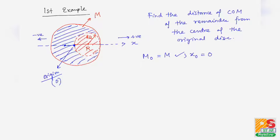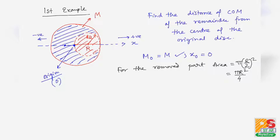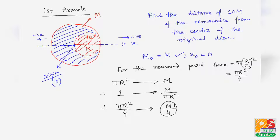What is the mass of the removed part? The area of the removed disc is π(R/2)² = πR²/4. The area of the entire disc is πR², which has mass M. By the unitary method, mass per unit area is M/(πR²), so the mass of area πR²/4 is M/4. Therefore m1, the mass of the removed part, is M/4.